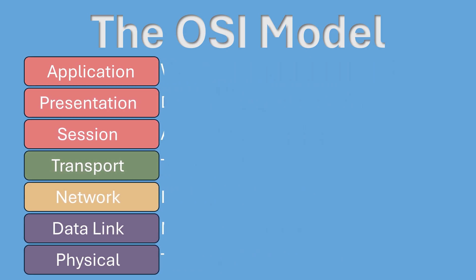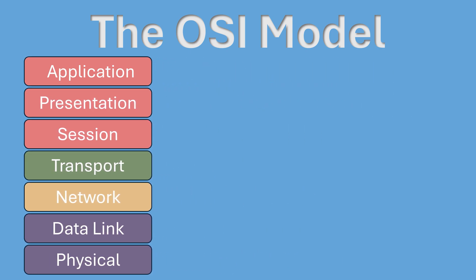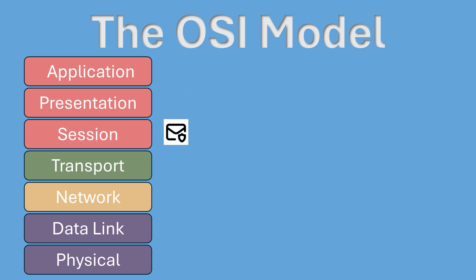As a real-world example, let's walk through how an email travels across the network using the OSI model. When you send an email, it goes through each layer. Starting at the application layer, your email client composes the message. At the presentation layer, your message is prepared for transmission — this involves encrypting the content to ensure its security as it travels across the network. The session layer then manages your login session, ensuring you remain authenticated with the email server throughout the process.